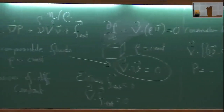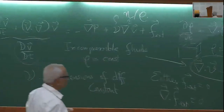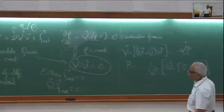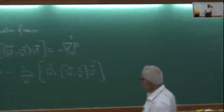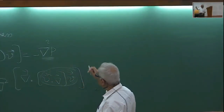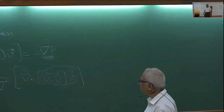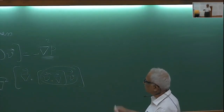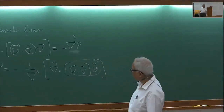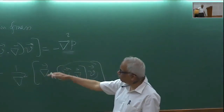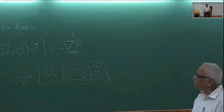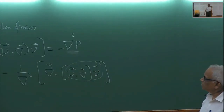As expected, grad p has exactly the dimension of v dot grad v, so everything checks dimensionally. Now comes the question of what are the scales we are talking about. There is a characteristic velocity v-bar, some characteristic flow speed, and L is some characteristic length scale. If it is water flowing through a pipe, the mean velocity of flow is your v-bar, and L is the radius of the cylinder through which the water is flowing.